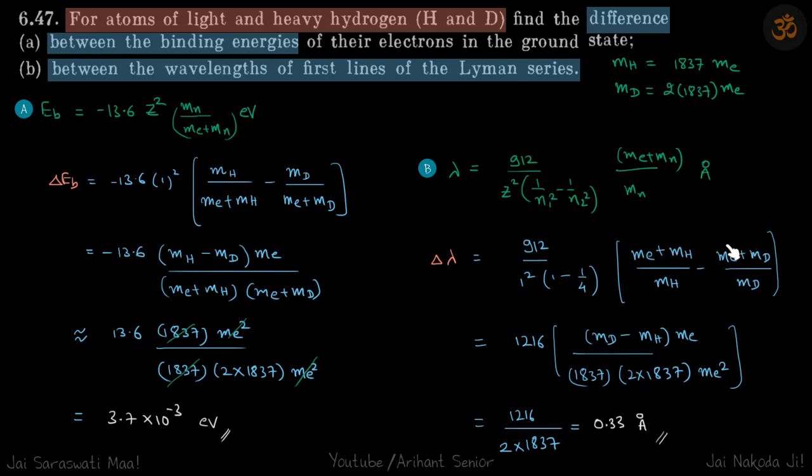Less energy means greater lambda for hydrogen and more energy means less lambda for deuterium. So both these results are consistent to each other.